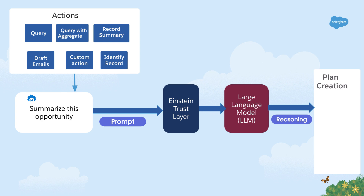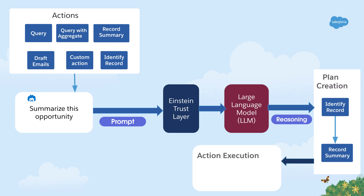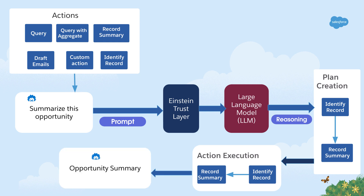For example, in this case, our plan will first include querying for the opportunity record and then summarizing it. Copilot then executes the actions based on the order generated by the plan, while respecting all of the user's permissions that you have configured. Here, Copilot first executes the query action, followed by — you rightly guessed it — the summarization action. If you're wondering how, as a developer, you can peek into all of the chaining of actions and their execution, say hello to Copilot Builder.